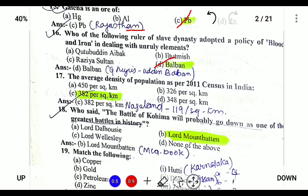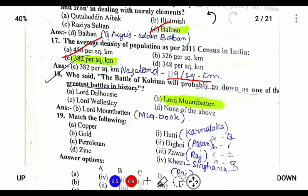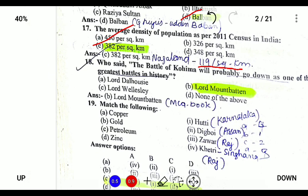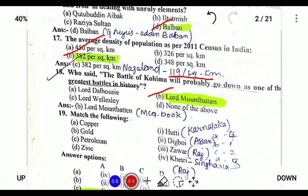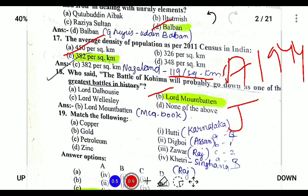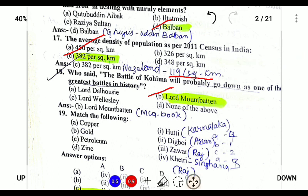Next, the average density of population in India is 382 per square kilometer, and in Nagaland it is 119 per square kilometer. Next, who said the Battle of Kohima will go down as one of the greatest battles in history? Lord Mountbatten was the one who said that. The Battle of Kohima started in April 1944 and ended in June 1944, and it was one of the bloodiest battles fought.